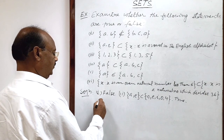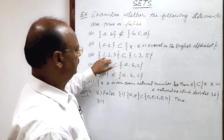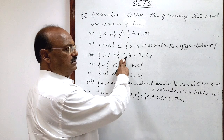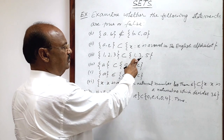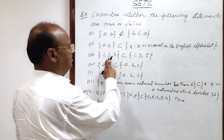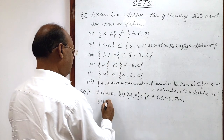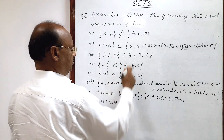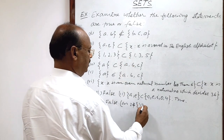Now let us see the third question. Here {1, 2, 3} are members of the left hand side set and {1, 3, 5} are members of the right hand side set, and the symbol is subset. Definitely this is not a subset. The reason is that 2 is available in the left set but 2 is not belonging to the right set {1, 3, 5}. So this statement is false.